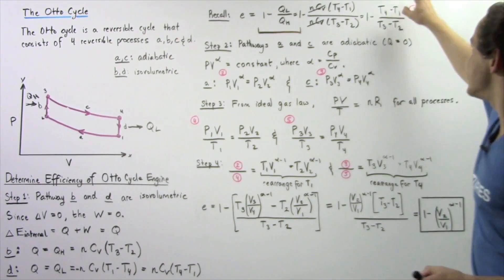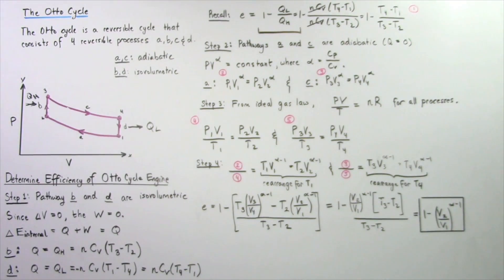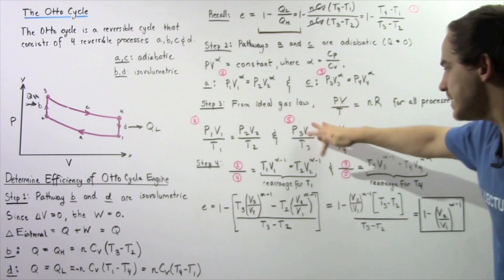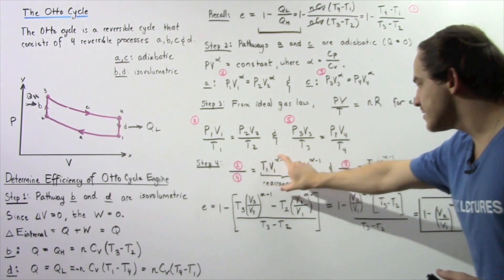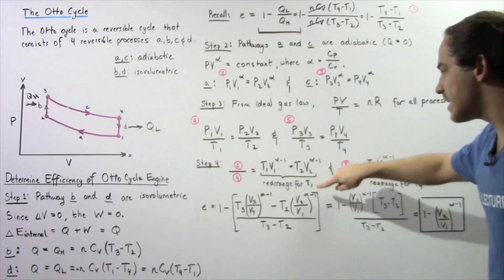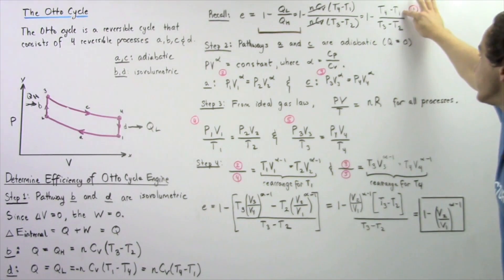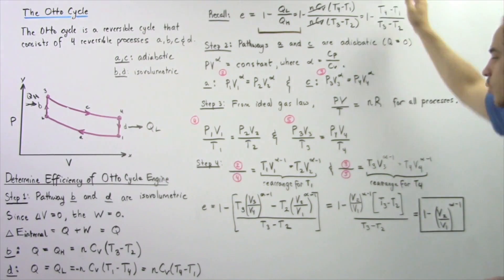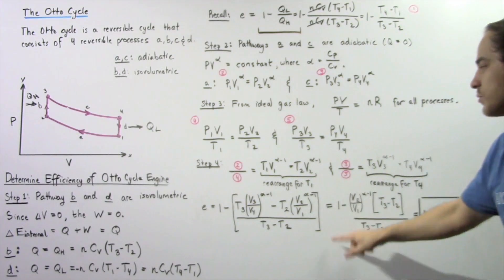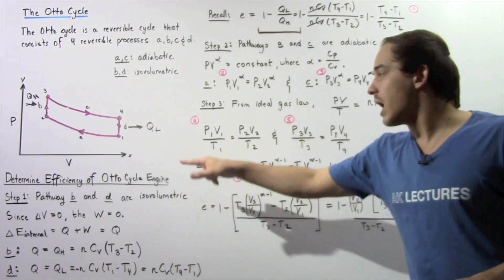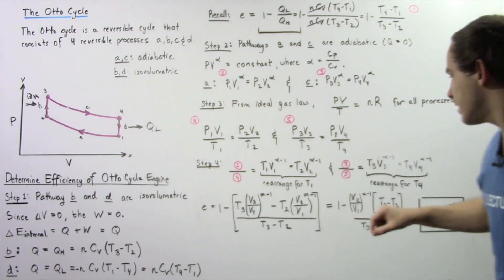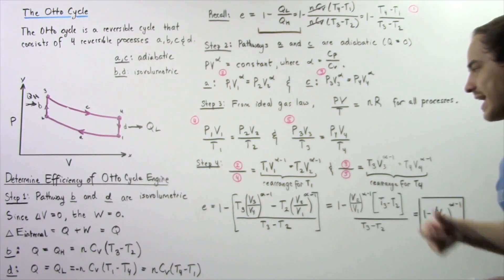We rearrange the first result to solve for T1 in terms of T2, V2, and V1, and rearrange the second result to solve for T4 in terms of T3, V3, and V4. Substituting these expressions for T1 and T4 into equation 1, the efficiency of the Otto cycle engine equals 1 minus the rearranged T4 expression over the rearranged T3 expression.